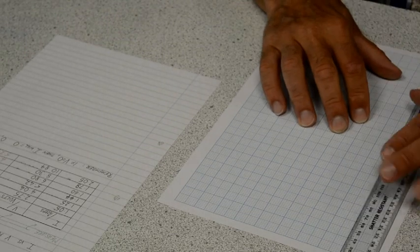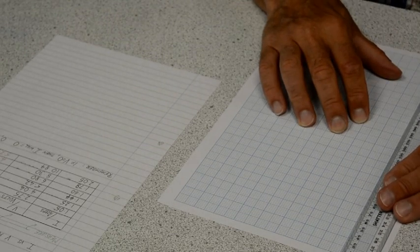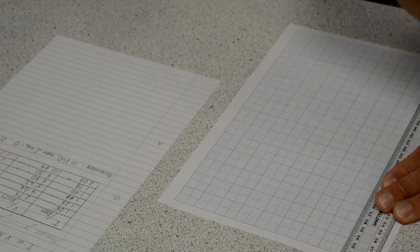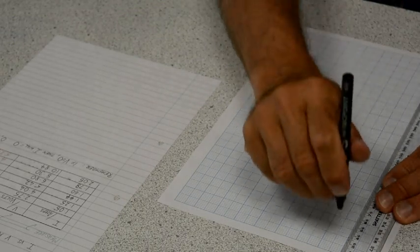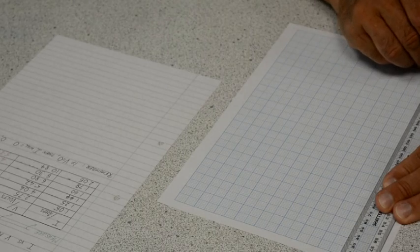Now decide whether to use the graph paper in portrait or landscape format. In this instance, it's probably best as portrait, and draw the axes on the paper.